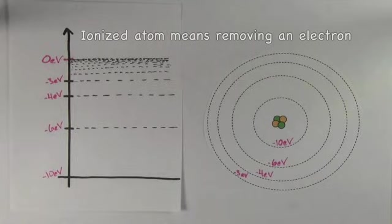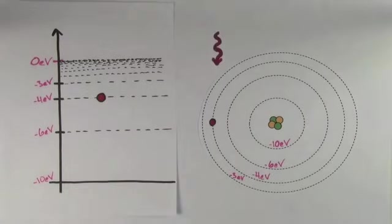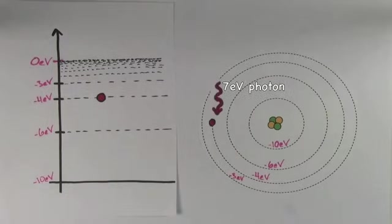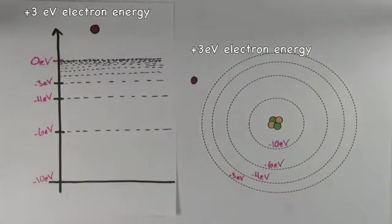So for example, say the electron started at the negative 4 eV energy level and it absorbed a 7 eV photon. That electron would have a total energy of positive 3 eV and so it would be gone from the atom.